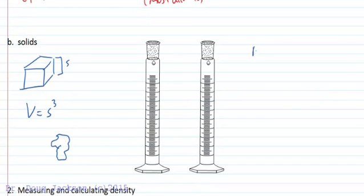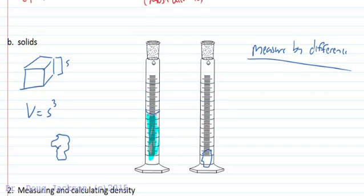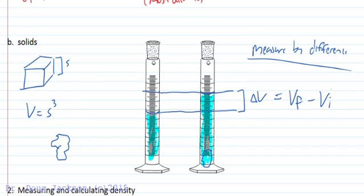We'll fill our graduated cylinder to a certain point and mark that volume. Then when we put our solid in, it will displace the liquid higher by the exact amount of volume that our solid takes up. The volume that we get is just the change in volume between the final volume reading that we take minus the initial. We can get the volume of an irregular solid using the measure by difference method.